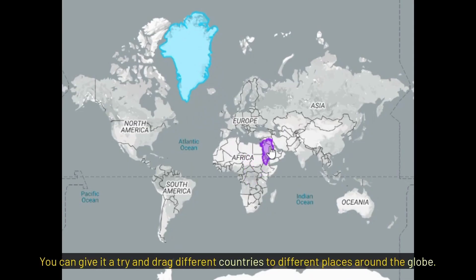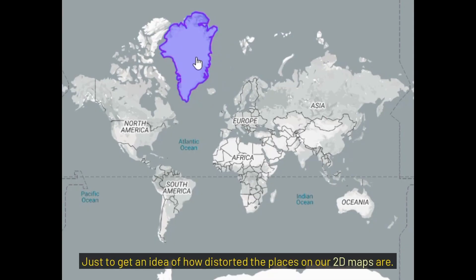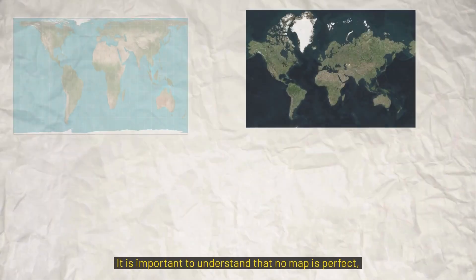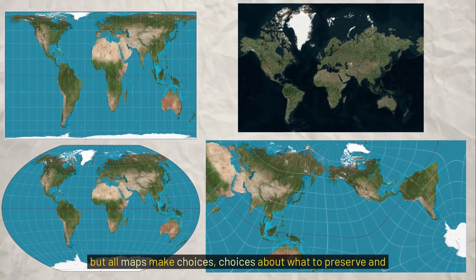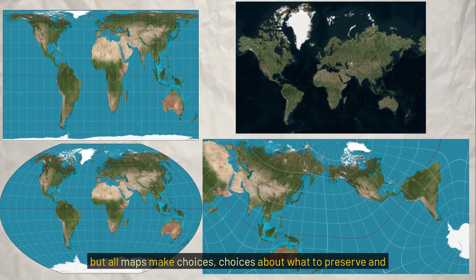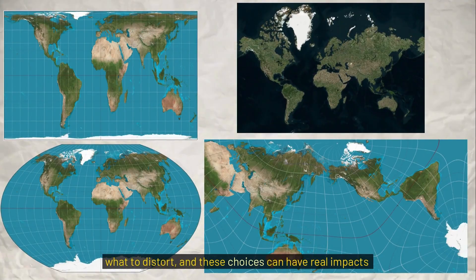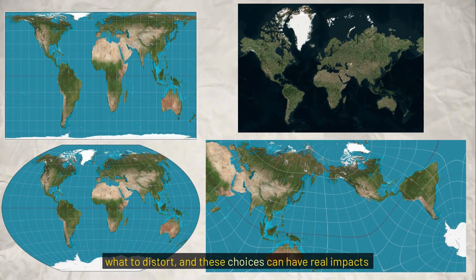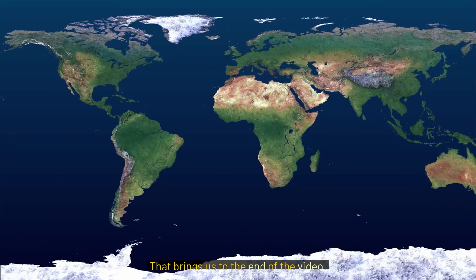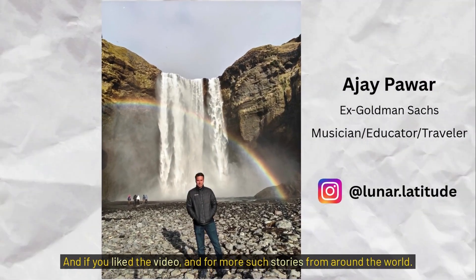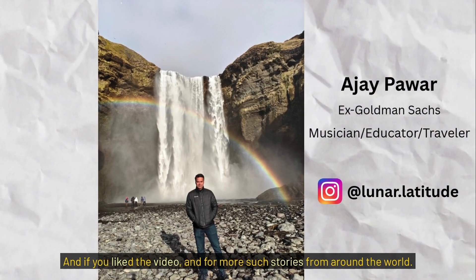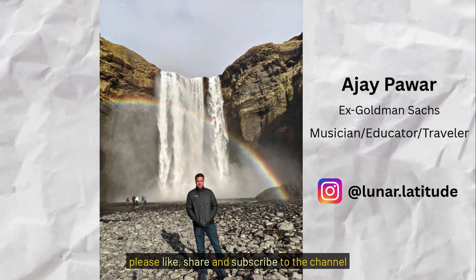You can try dragging different countries to different places around the globe to get an idea of how distorted places on 2D maps are. It is important to understand that no map is perfect, but all maps make choices — choices about what to preserve and what to distort — and these choices can have real impacts on how people view the world. Thanks for watching; if you liked the video and want more such stories, please like, share, and subscribe to the channel.